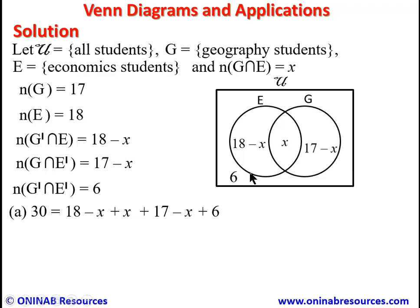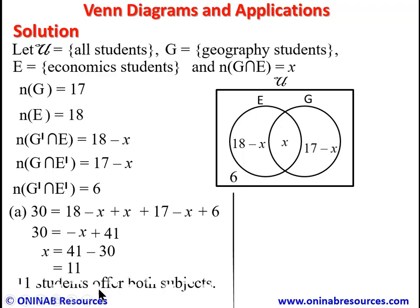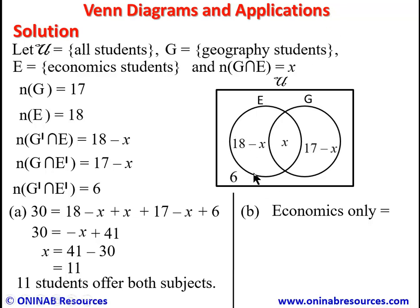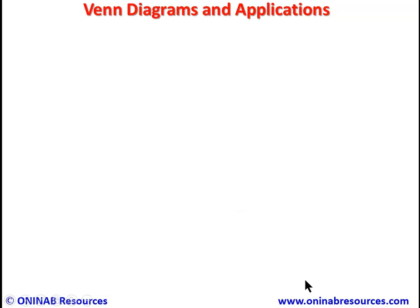Solving the equation: the +X and −X cancel, leaving 30 = 18 + 17 + 6 − X = 41 − X, so X = 41 − 30 = 11. Therefore 11 students offer both subjects. For part (b), economics only = 18 − X = 18 − 11 = 7. So 7 students offer economics only.